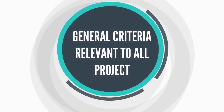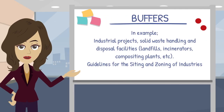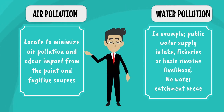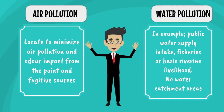Some general criteria relevant to all projects are as below. Appropriate buffer zones should be included with respect to a specific category of development projects, for example industrial projects, solid waste handling and disposal facilities, landfills, incinerators, composting plants, and so on. The guidelines for the siting and zoning of industries can be used as a general guide, subject to the findings of the EIA. Air pollution: facilities should be located to minimize air pollution and odor impact from point and fugitive sources. Where emissions of carcinogenic or mutagenic substances are possible, account should be made for health risks. For water pollution, siting a facility along water courses can cause their eventual degradation and affect critical beneficial uses downstream such as public water supply intakes, fisheries, or basic riverine livelihood. Water catchment areas should be avoided.